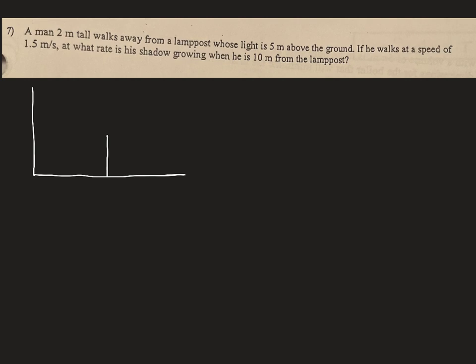Okay, if he walks at a speed of 1.5 meters per second, at what rate is his shadow growing when he's 10 meters from the lamppost? So I'm going to draw a line coming down here, because that would be the light hitting the top of his head. And then his shadow would be created here. I'll do that in blue. So that's his shadow.